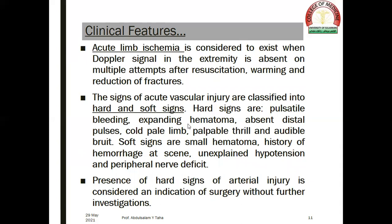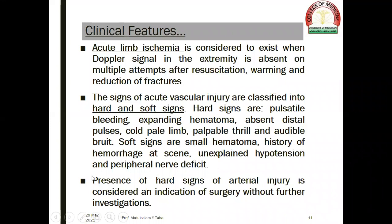The signs of acute vascular injury are classified into hard and soft signs. Hard signs include pulsatile bleeding, expanding hematoma, absent distal pulses, cold pale limb, palpable thrill, and audible bruit. Soft signs include a small hematoma, history of hemorrhage at the scene, unexplained hypotension, and peripheral nerve deficit. The presence of hard signs of arterial injury is considered an indication for surgery without further investigations.